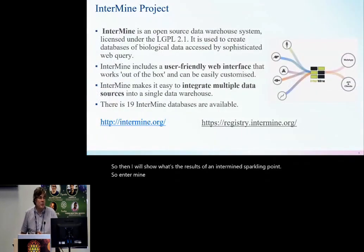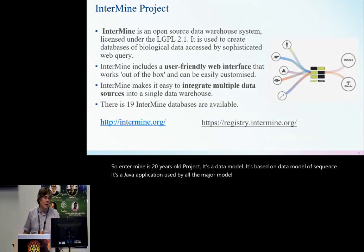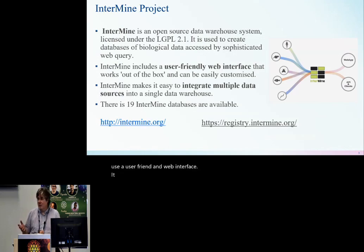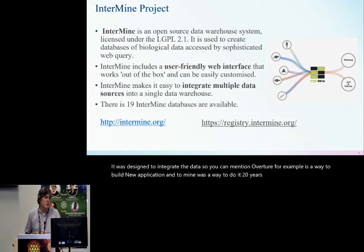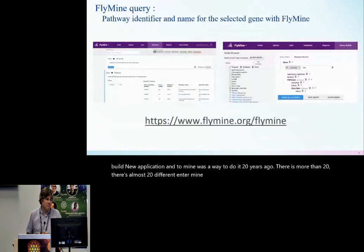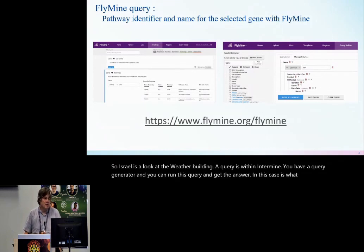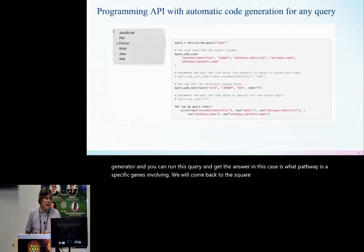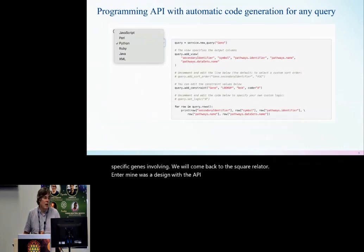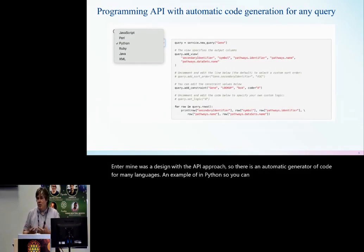Intermine is a 20-year-old project. It's a data model based on a sequence data model — a Java application used by all the major model organism databases. It has a very user-friendly web interface and was designed to integrate data. You can mention Overture as a way to build new applications; Intermine was the way to do it 20 years ago. There are almost 20 different Intermine databases. Here's a look at what building a query is within Intermine: you have a query generator, you can run this query and get the answer — in this case, what pathway a specific gene is involved in. We will come back to this query later. Intermine was designed with the API approach; there is an automatic code generator for many languages. Here's an example in Python — you can build a query and then run it within your preferred language.